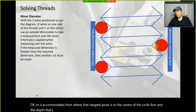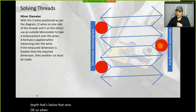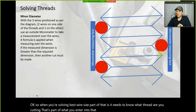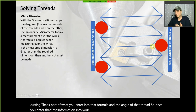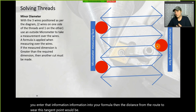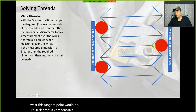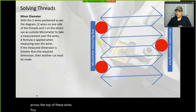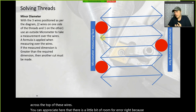When solving best wire size, part of what you enter into the formula is what thread you're cutting and the angle of that thread. Once you enter that information, the formula compensates for the distance from the root to where the tangent point would be at 90 degrees. You'll know if you're at the right depth by measuring across the tops of the wires.